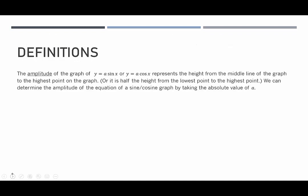Some definitions we're going to encounter with our sine and cosine graphs. The first one is called the amplitude. The amplitude of a sine or cosine graph represents the height from the middle line of the graph to the highest point on the graph. The other way we can interpret amplitude is that it's half the height from the lowest point to the highest point of the graph. We can determine the amplitude from the equation by taking the absolute value of a, where a is the coefficient of either sine or cosine.